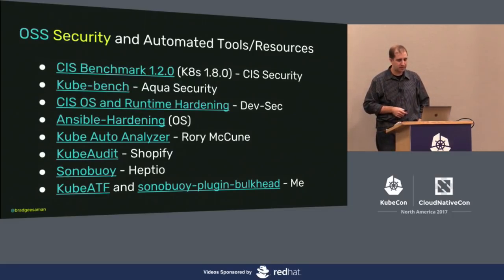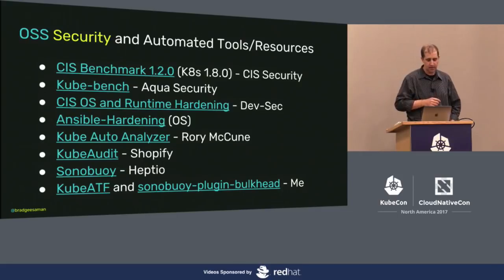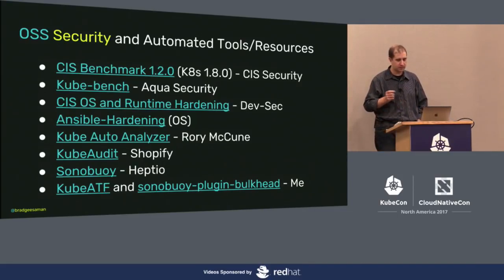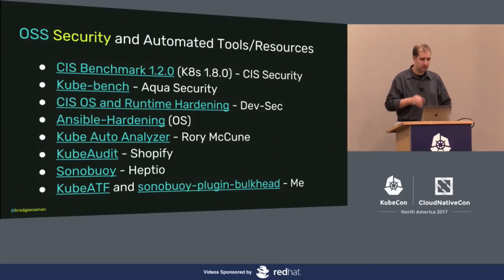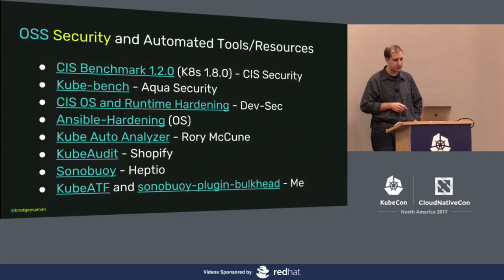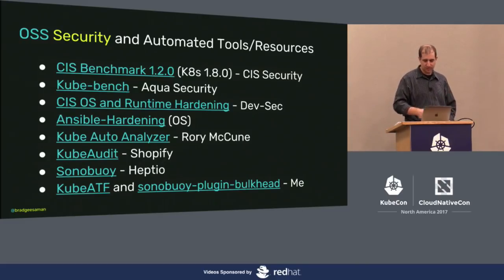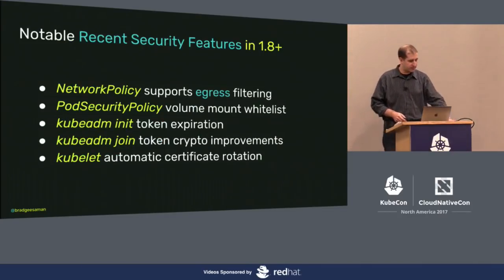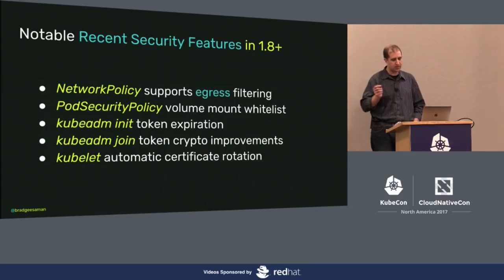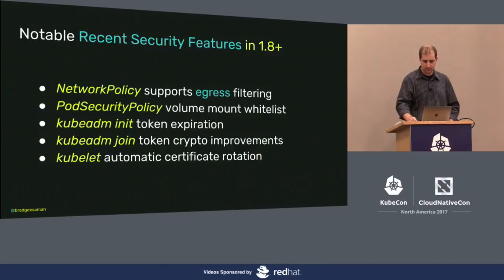Tools I found of note for auditing: the CIS benchmark has been updated for 1.8 — it's a great resource. kube-bench implements it nicely and is very straightforward to run. CIS OS and runtime hardening from DevSec, and Ansible hardening from Major Hayden and the OpenStack folks, are really good at ensuring underlying posture. And kube-audit — I think that's the next talk — and Sonobuoy. Notable security features in 1.8: network policy and pod security policy whitelisting, egress support which is huge, and volume mount whitelisting which prevents a lot of those node access bits.